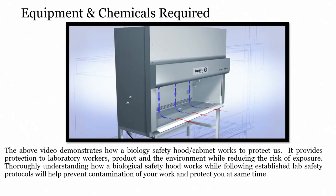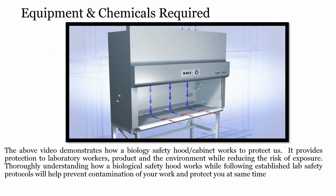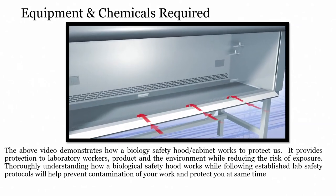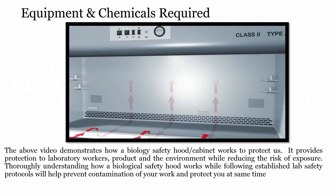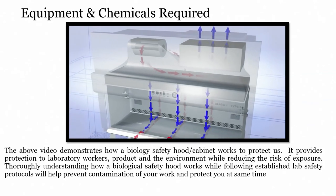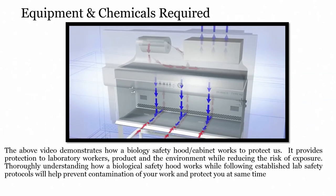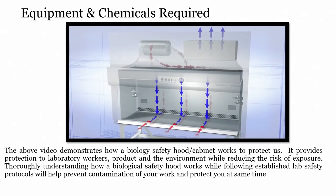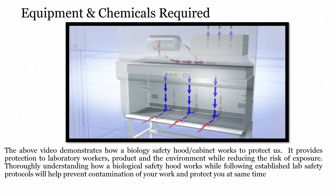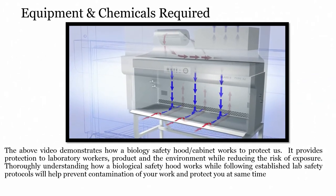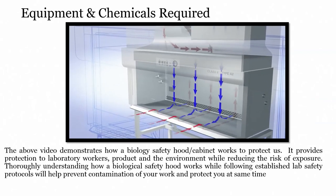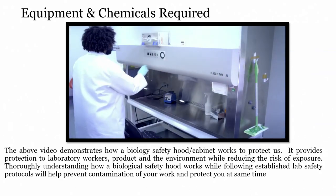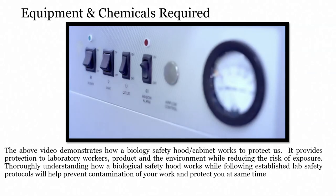The BSC's air filtration system works to keep potentially contaminated air from seeping back onto the worker. Air flows through the window opening into the front grill, through the plenum, then through the HEPA filters. 30% of the filtered air is exhausted. The remaining 70%, which is now HEPA filtered, is recycled back into the workspace. To ensure maximum protection in using a BSC, here are some essential reminders.